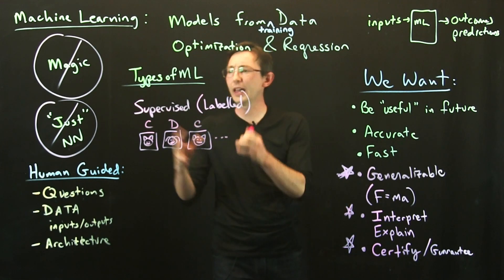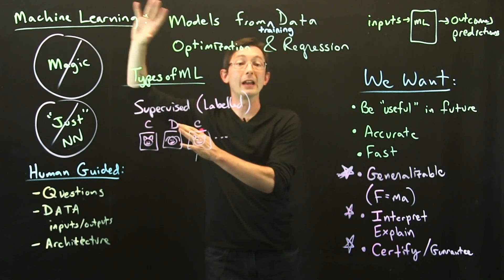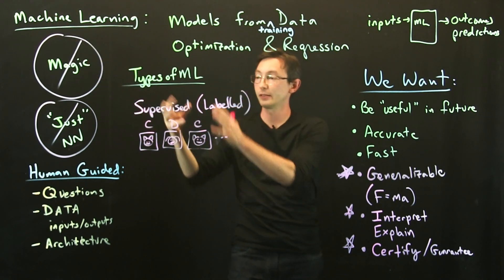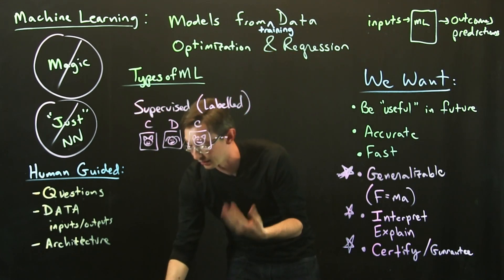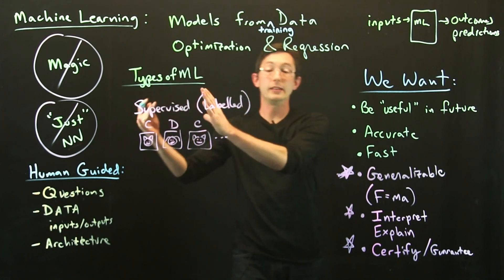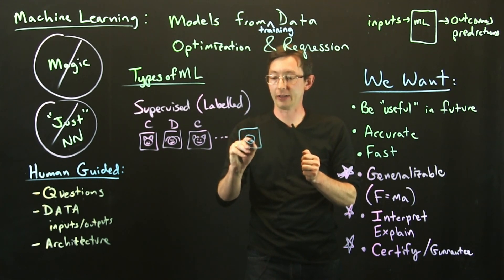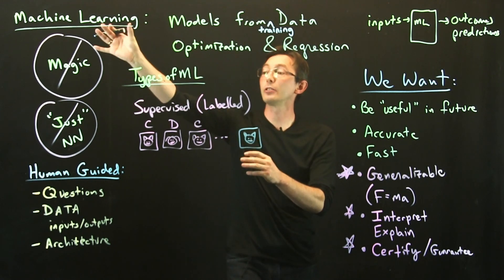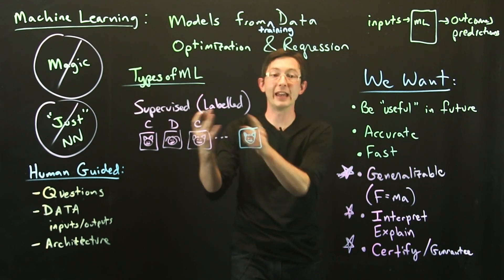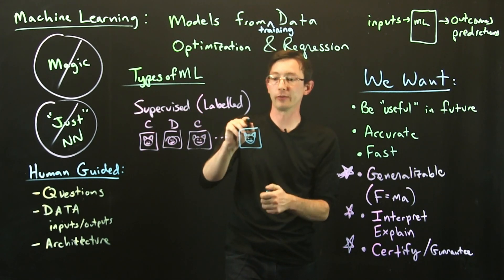Then a supervised learning algorithm—there's a whole family of machine learning algorithms, supervised algorithms—will allow me to build a classifier so that in the future, if I have a picture of a cat, the algorithm can learn how to label that cat as the supervisor would have.